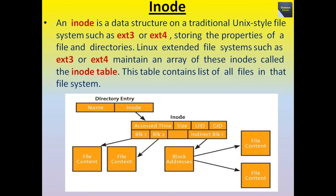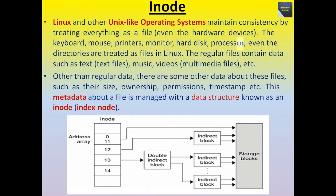An inode is a data structure on a traditional Unix style file system such as ext3 or ext4, storing the properties of files and directories. Linux extended file systems such as ext3 or ext4 maintain an array of these inodes called the inode table. This table contains a list of all files in that file system. Linux and other Unix-like operating systems maintain consistency by treating everything as a file — even hardware devices, the keyboard, mouse, printers, monitors, hard disks, and even directories are treated as files in Linux.